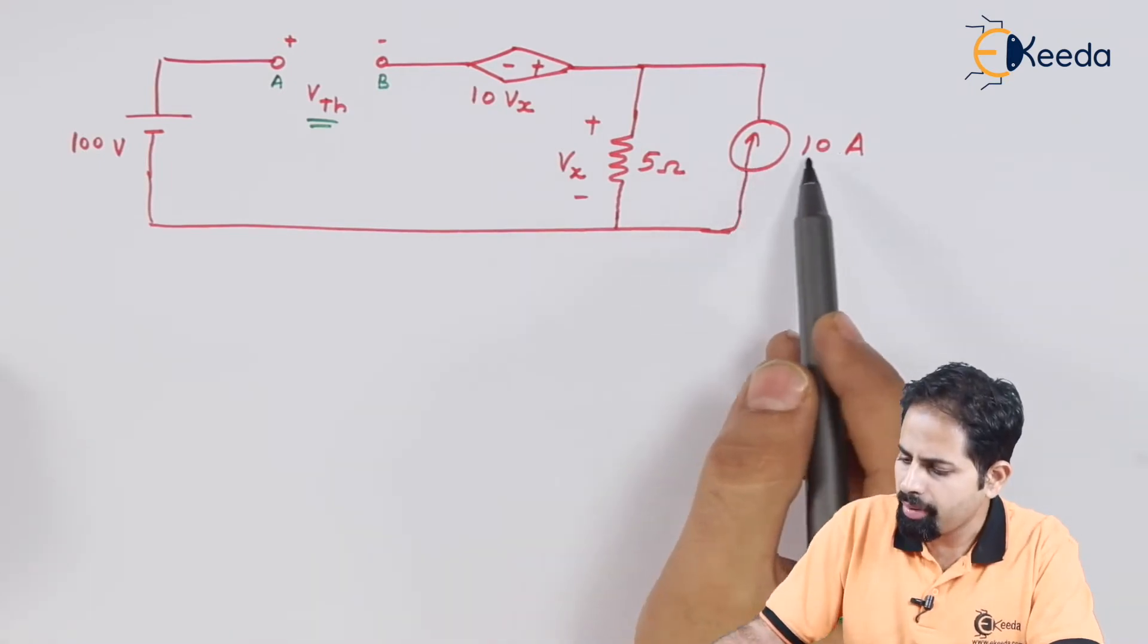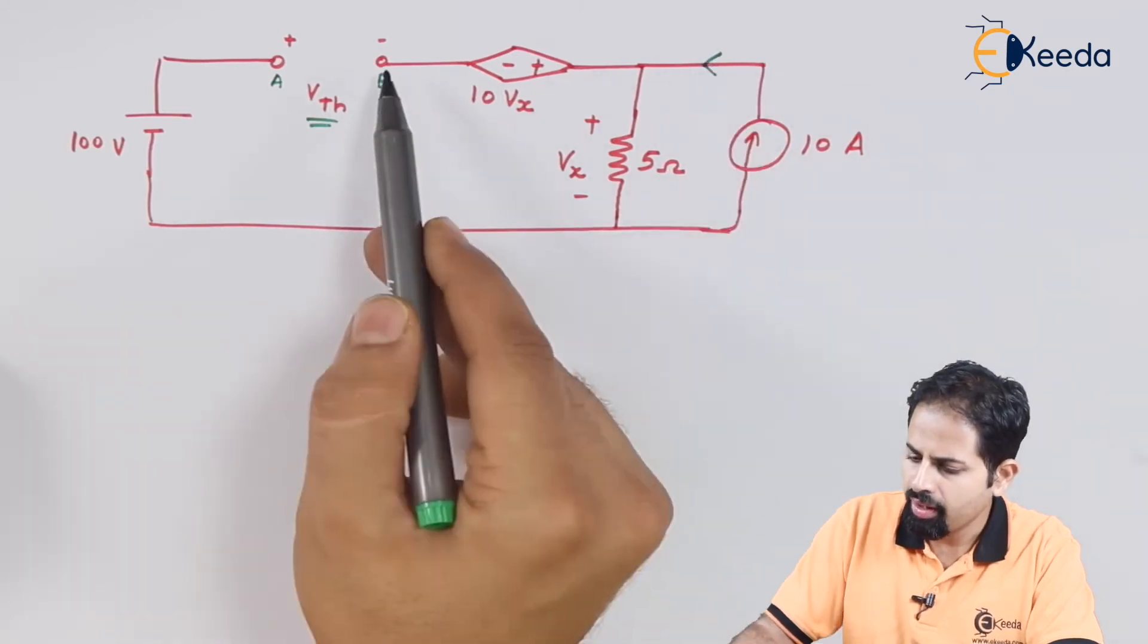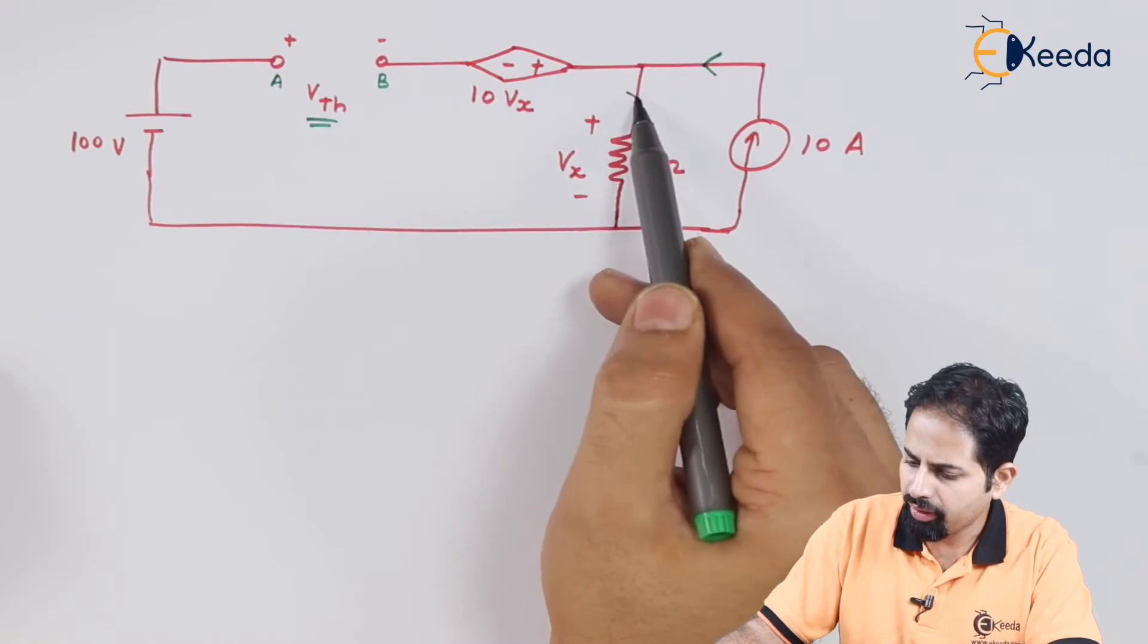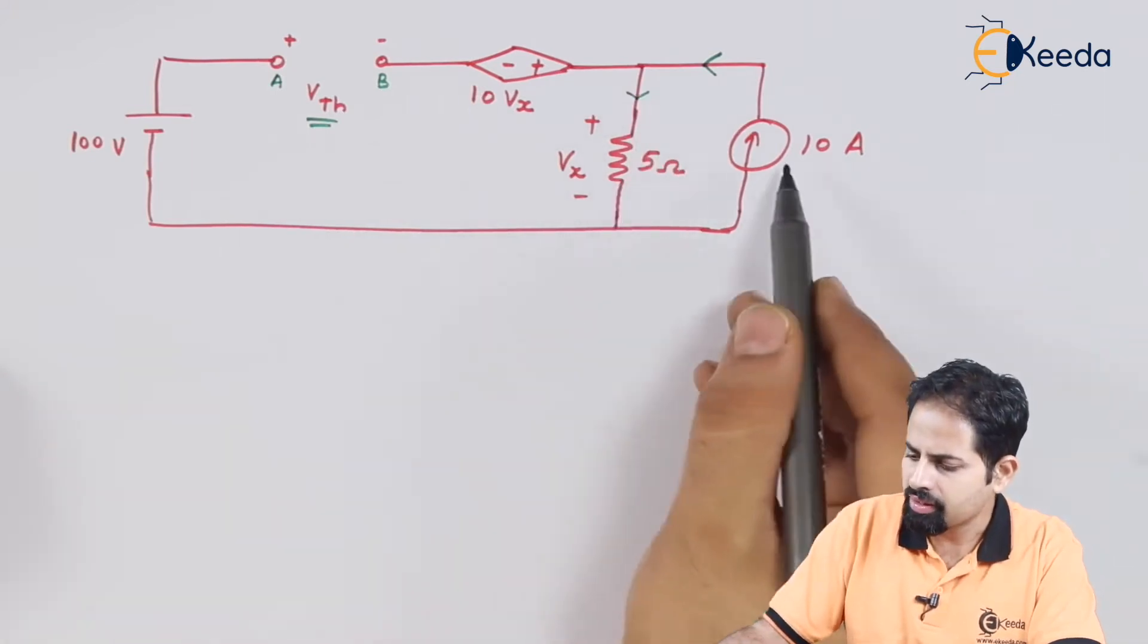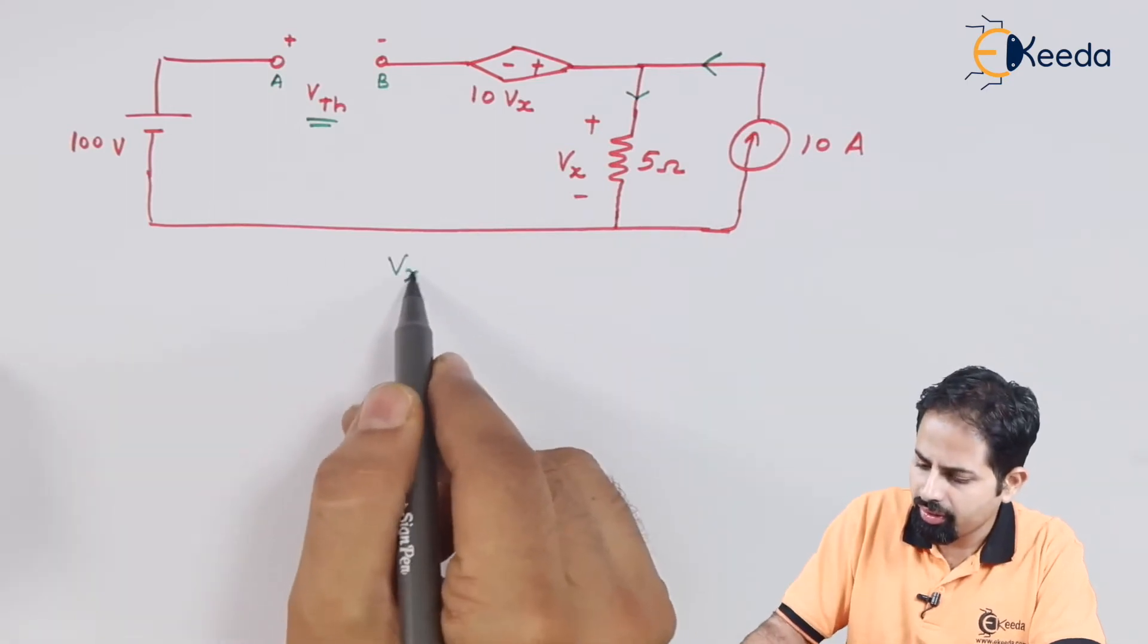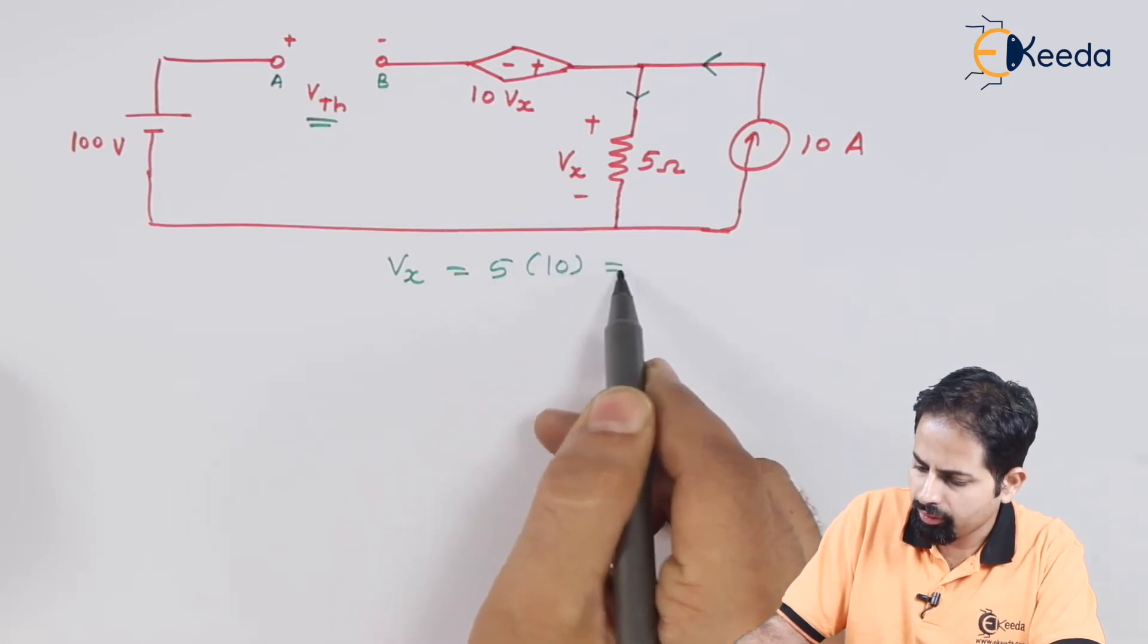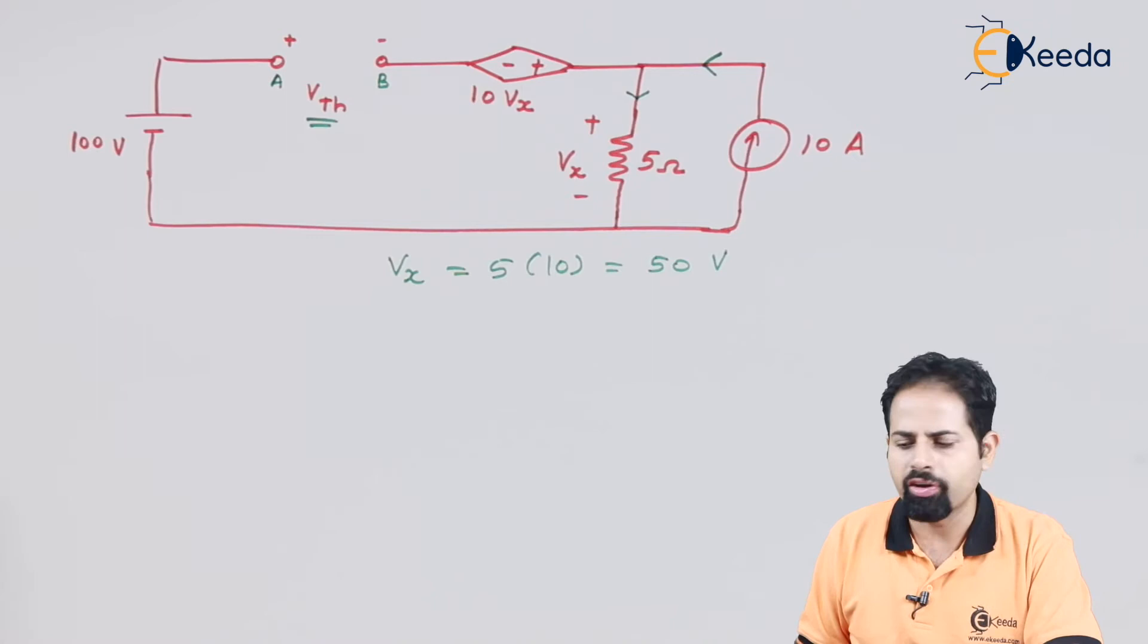You can see that this 10 ampere current source which is entering here, it will not go beyond this point B because it is open circuit. So the complete current will go here. So voltage is nothing but resistance into current. So we can write Vx is equal to 5 multiplied by 10. So we have got Vx is equal to 50 volts.